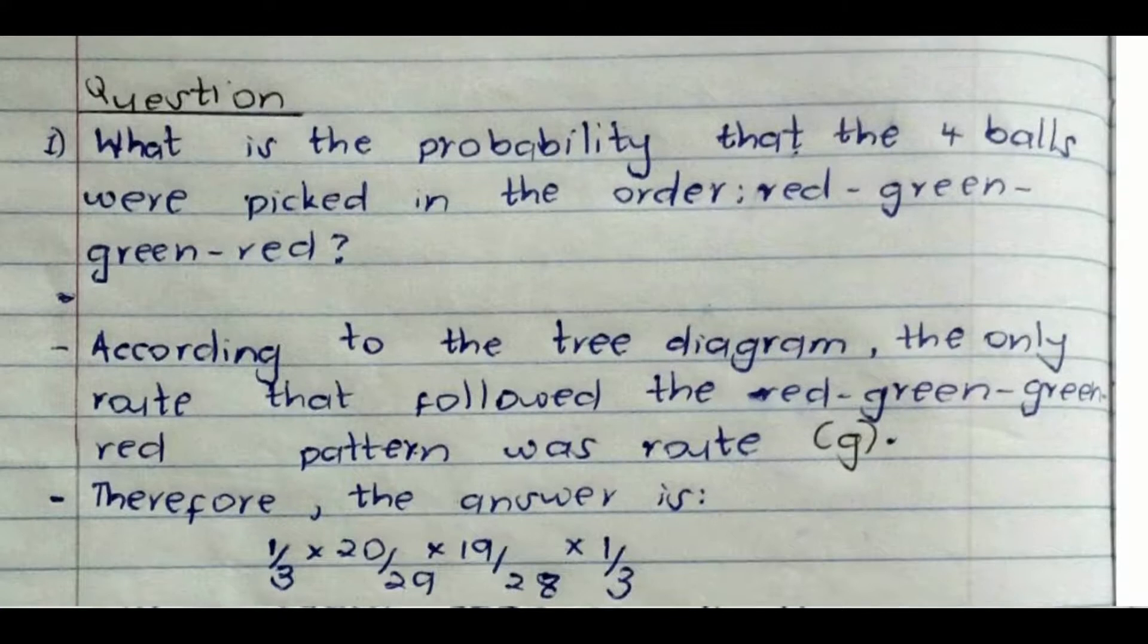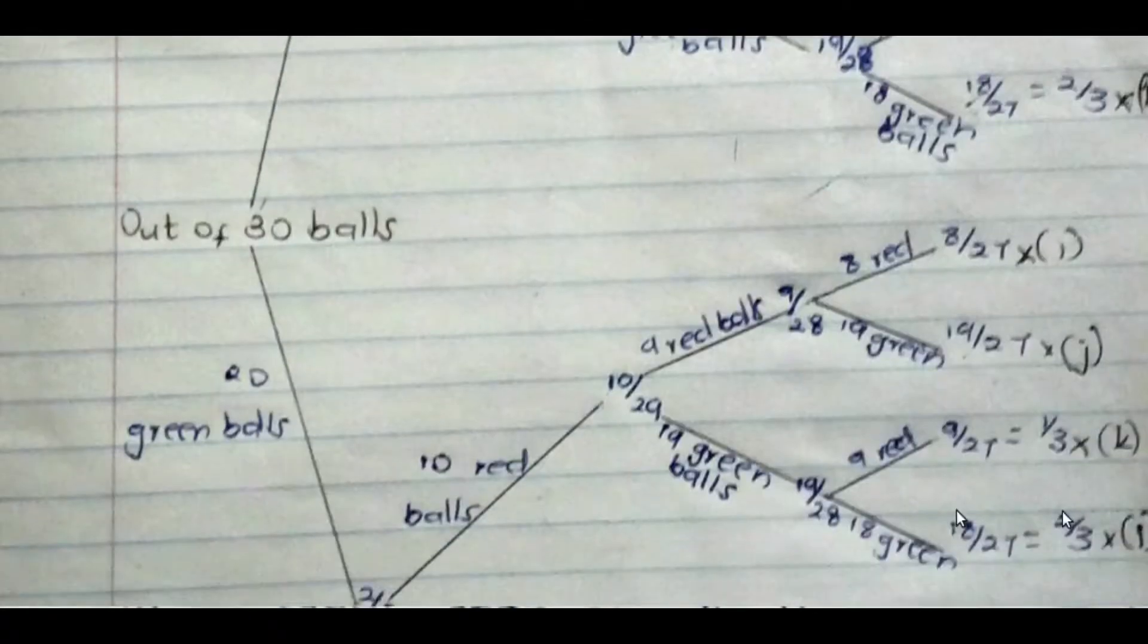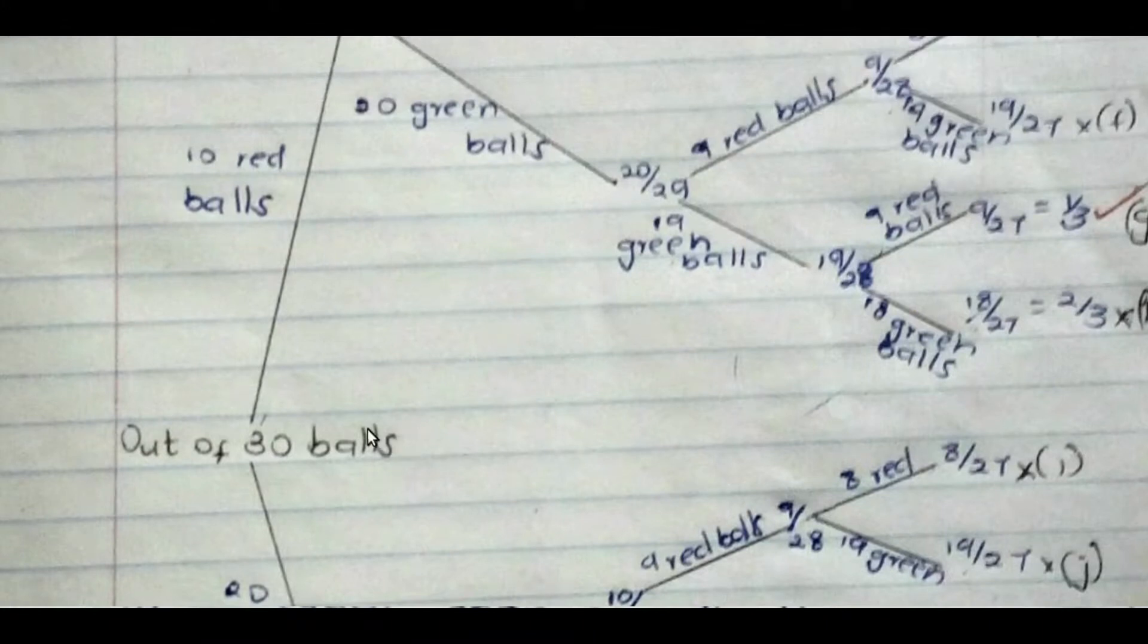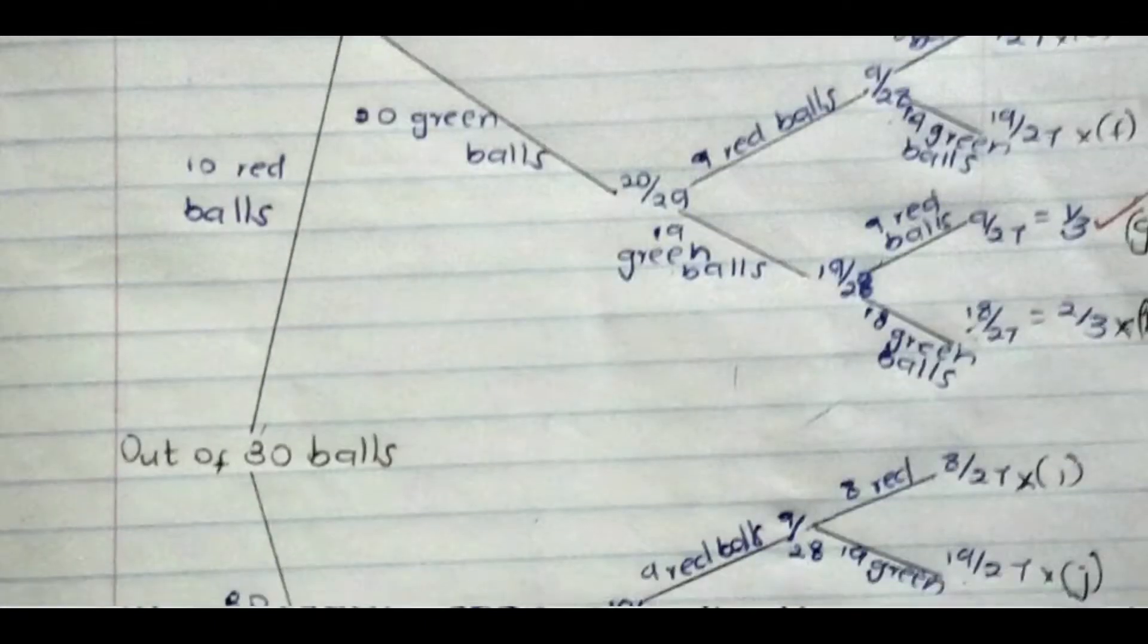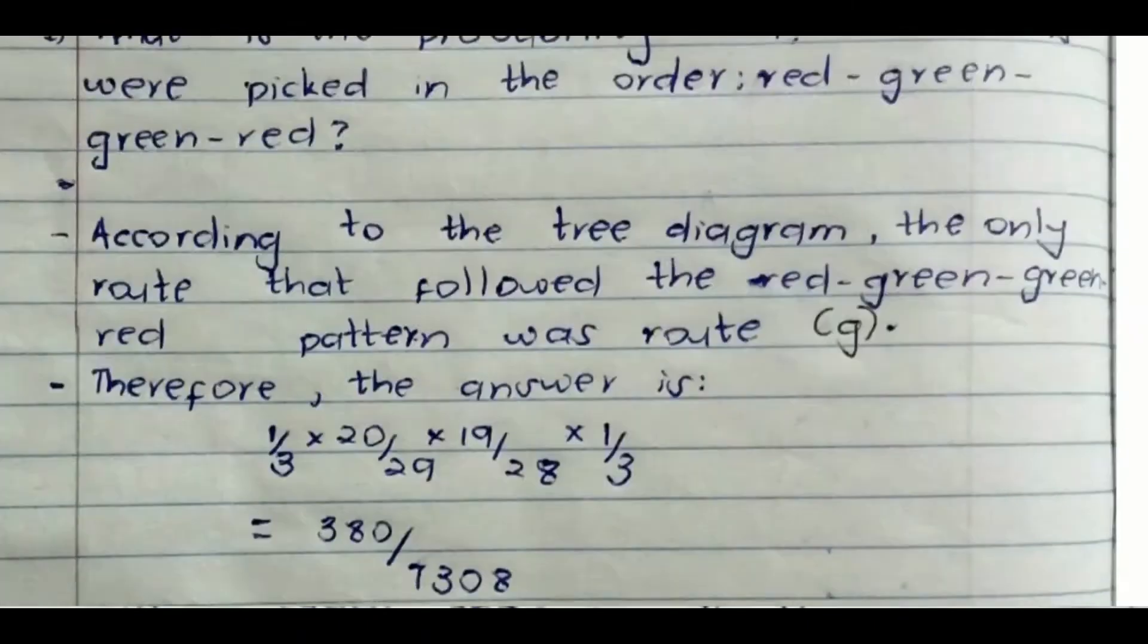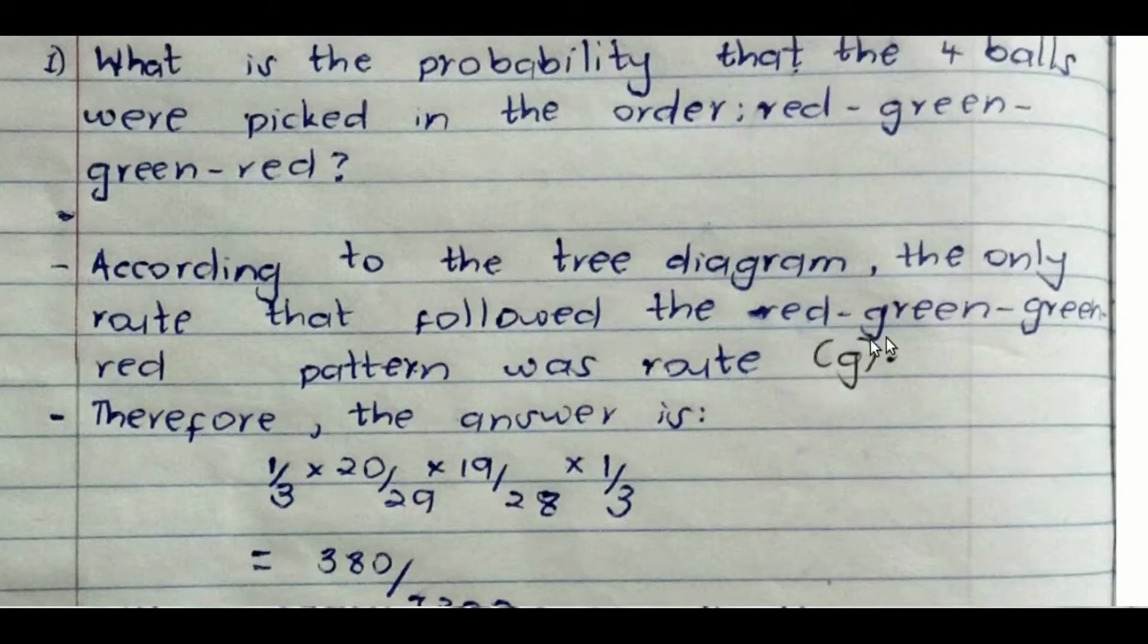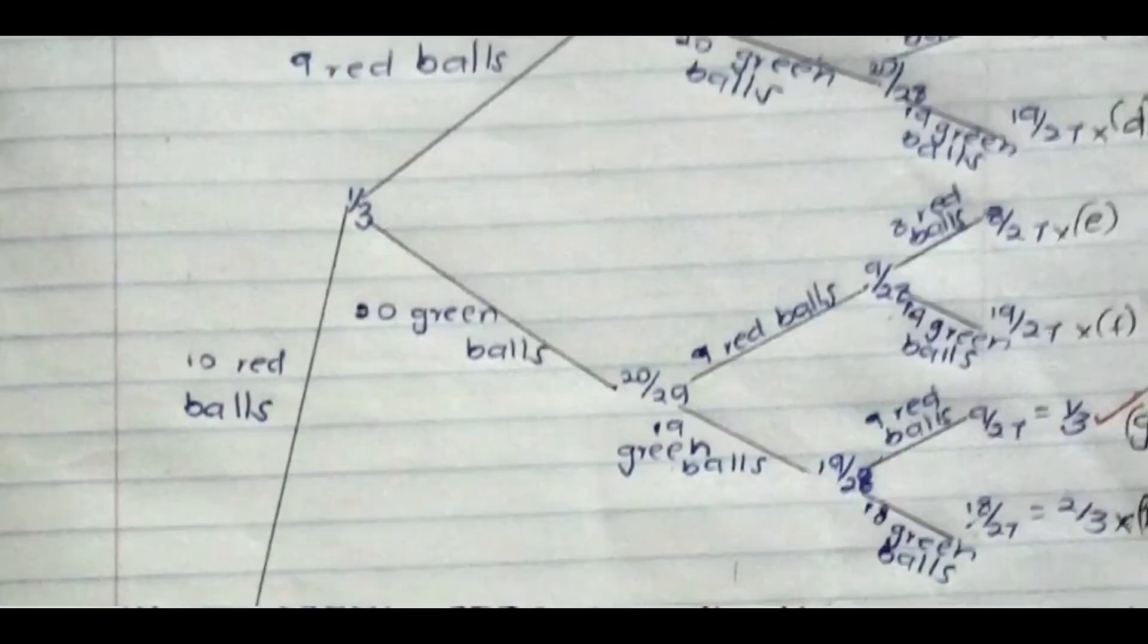As a rule, we start by representing this problem in a diagram. And this is the diagram. We have 30 balls and we are picking from that. So we only have two choices. Either we pick a red one or we pick a green one. If we pick a red one, the second chance we could still pick a red or we could still pick green. In this case, our issue is we want to pick red, and then we pick green, and then we pick green, and then we pick red. So what's the route? The route is simple. It's here.